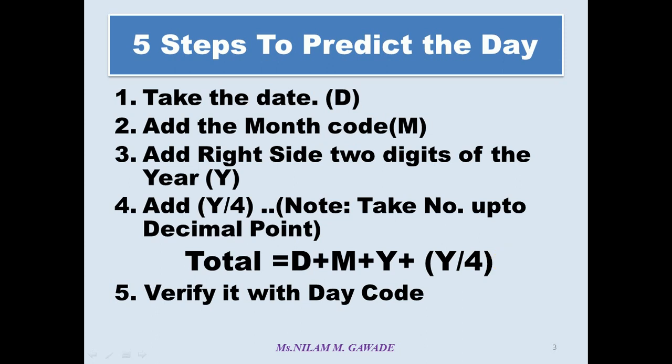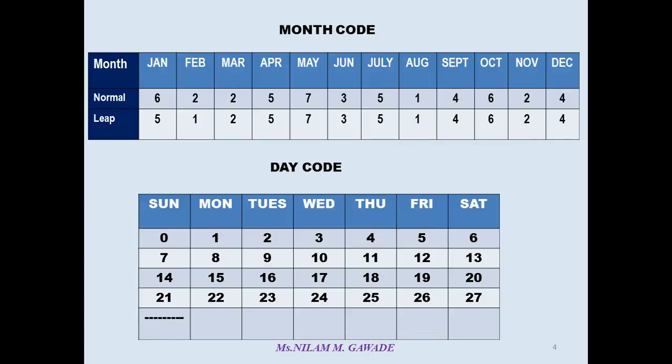Let us see what is month code and day code. So this is a simple chart to remember month code. We have to use these codes for January, February up to December. For normal year, the code is 6, 2, 2, 5, 7, 3, 5, 1, 4, 6, 2, 4. And for leap year, the only change is in January it is 5 and in February it is 1. Rest of the things are same. You can remember this table just by using various methods, just you can remember as your phone number.